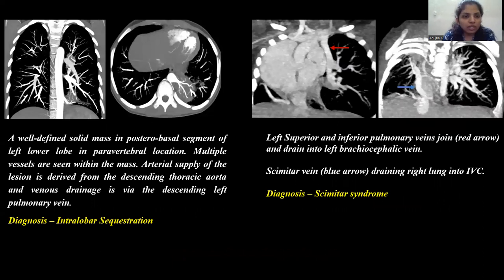Axial and coronal contrast-enhanced CT images show a well-defined solid mass in the posterior basal segment of the left lower lobe in a paravertebral location. Multiple vessels are seen within the mass. Arterial supply of the lesion is derived from the descending thoracic aorta, and venous drainage is via the descending left pulmonary vein. This is a case of intralobar sequestration.